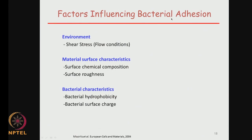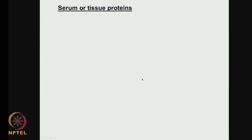What are the factors influencing bacterial adhesion environment? If there is continuous flow, shear forces can prevent biofilm formation, whereas if there is stagnant flow, this can lead to biofilm attachment. Material surface characterization — like surface chemical composition, surface roughness, hydrophilicity, and hydrophobicity — plays a role. Bacterial characteristics such as bacterial hydrophobicity, hydrophilicity, and bacterial surface charge also matter. All three factors affect biofilm and bacterial adhesion.